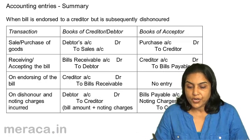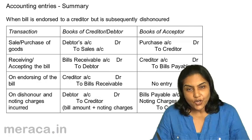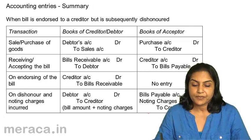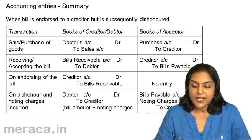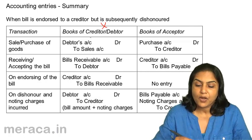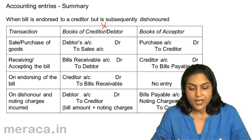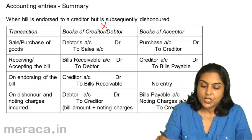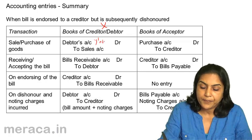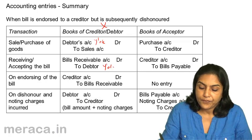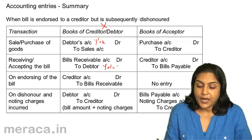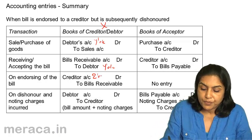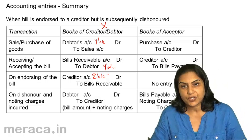If you notice, the entries in the books of the acceptor are the same irrespective of whether the creditor retains the bill till maturity, discounts it with the bank, or endorses it to another creditor. When the bill is endorsed to a creditor and subsequently dishonoured: in X's books, on sale — Y's account debit to sales; on receipt of the bill — bills receivable account debit to Y. Assuming the bill has been endorsed to Z: Z's account debit to bills receivable.